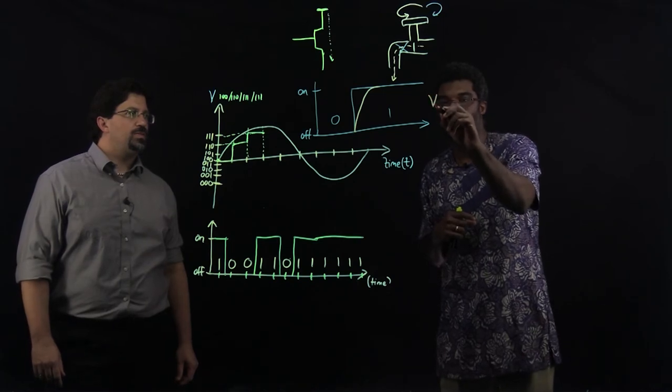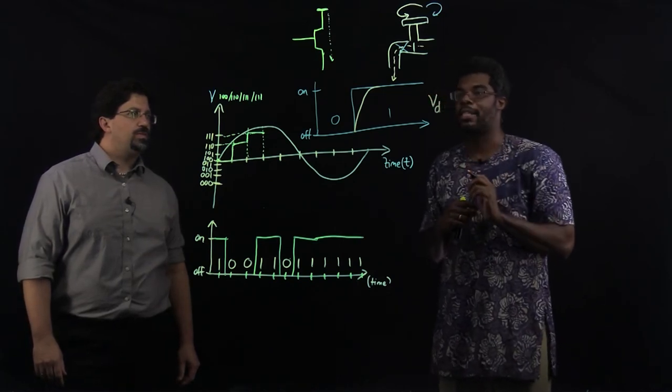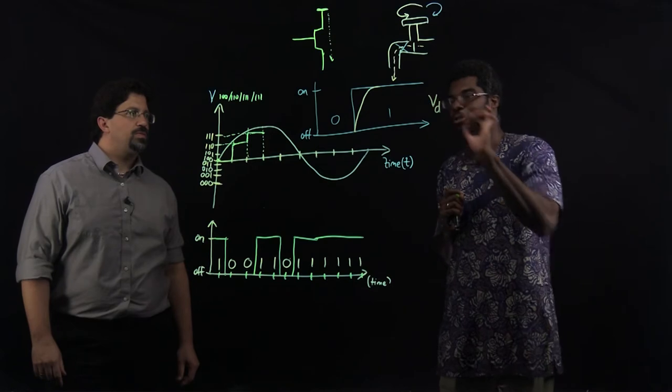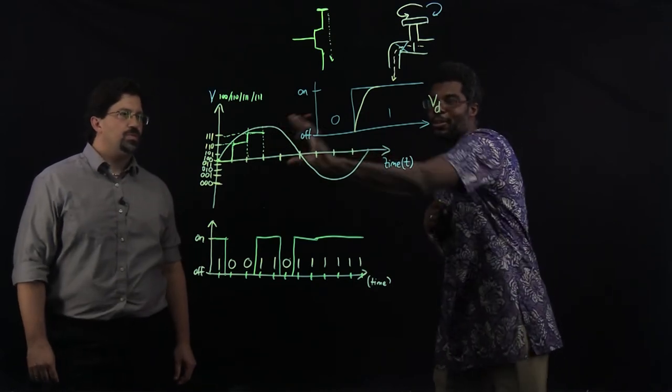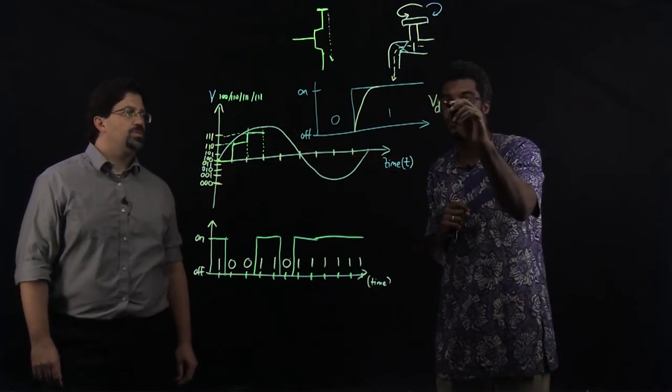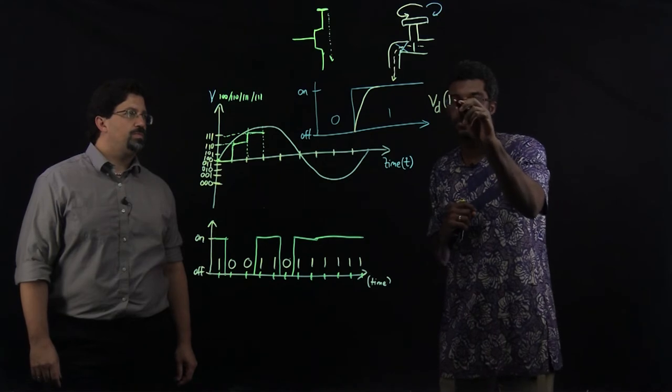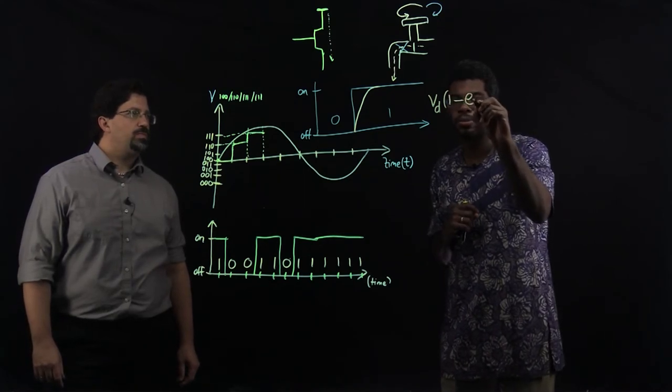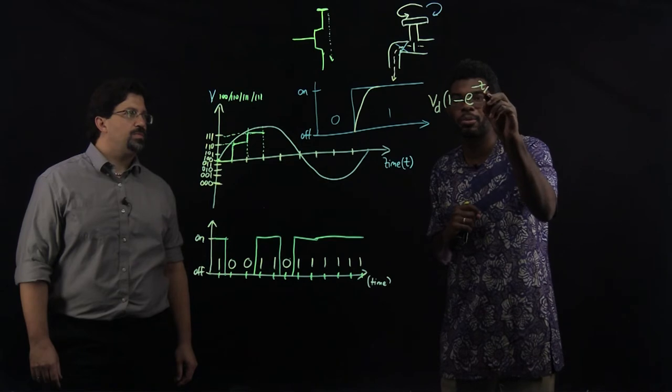So I am going to use V subscript D to show that that is the digital voltage, not the very first voltage that we had, which was analog. And it uses a negative exponent.